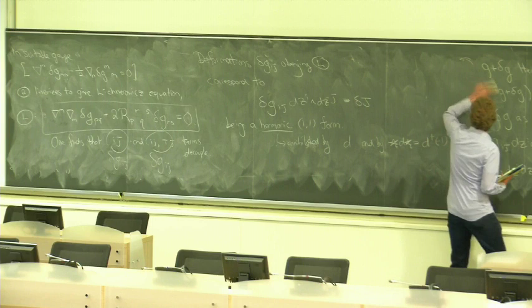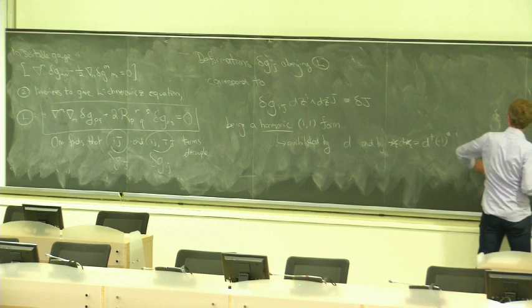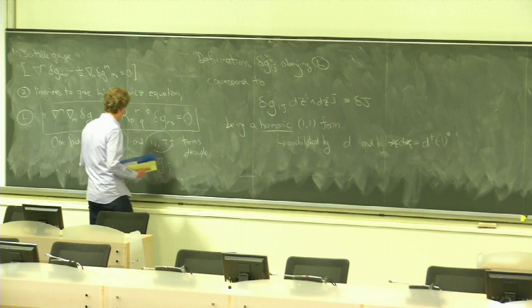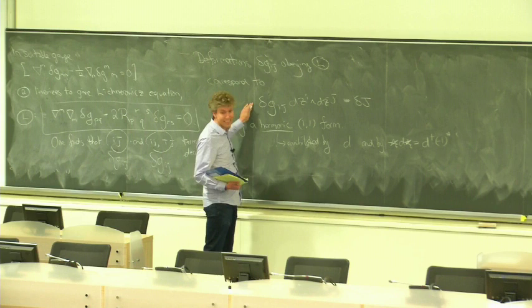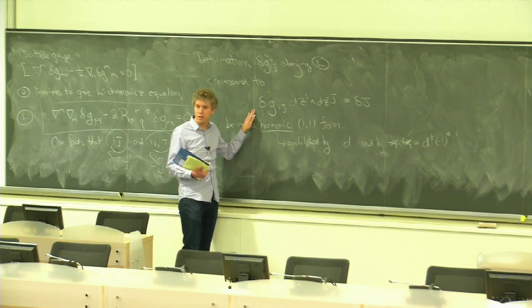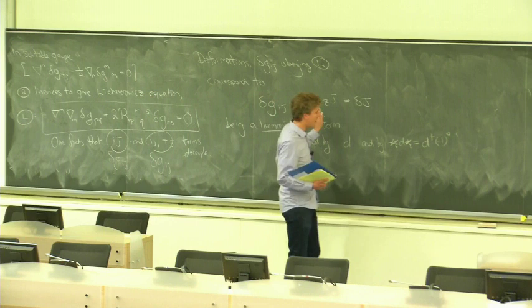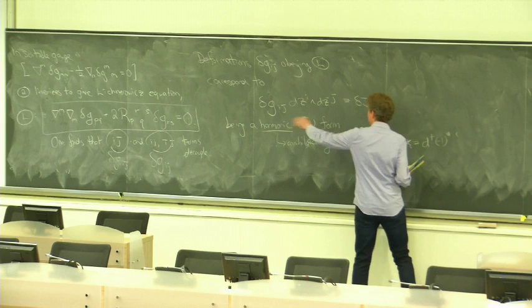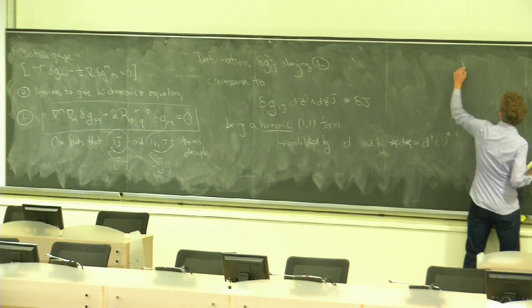Why is this a useful way of organizing the problem? We're studying deformations of type delta G_{i j-bar}. From such a deformation you can make a (1,1) form. A deformation fulfills Lichnerowicz if the (1,1) form is harmonic: D of this equals zero, D-dagger of this equals zero. The utility in describing things in terms of harmonic forms is Hodge's theorem.